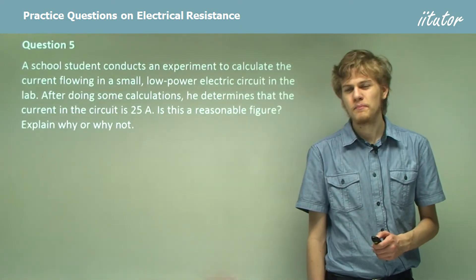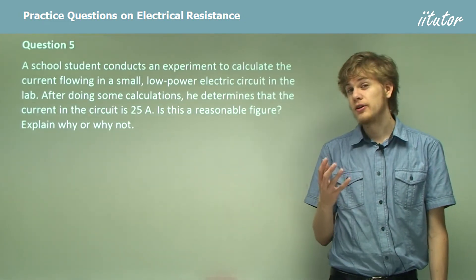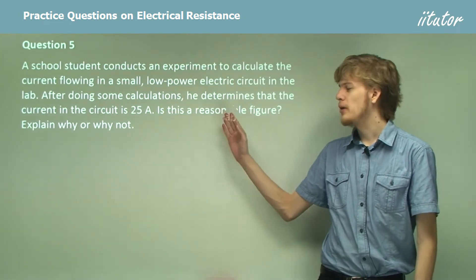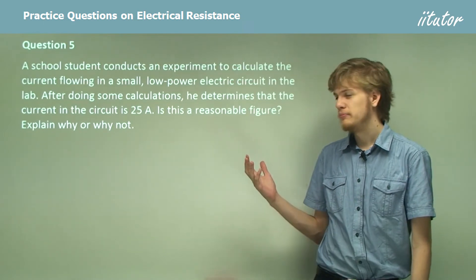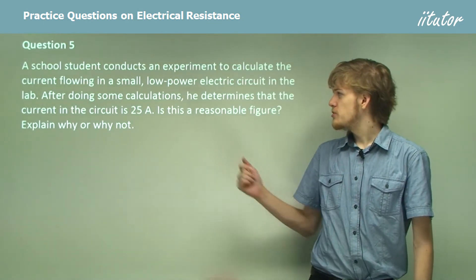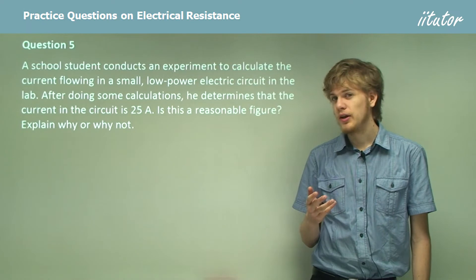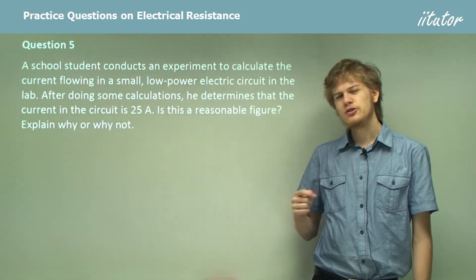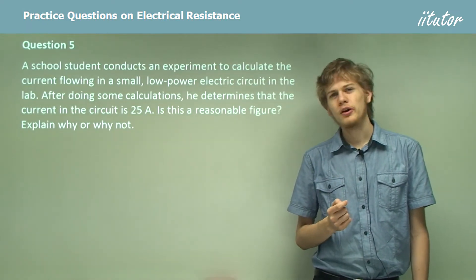Question 5. A school student conducts an experiment to calculate the current flowing in a small low power electric circuit in the lab. After doing some calculations, he determines that the current in the circuit is 25 amps. Is this a reasonable figure? Explain why or why not.